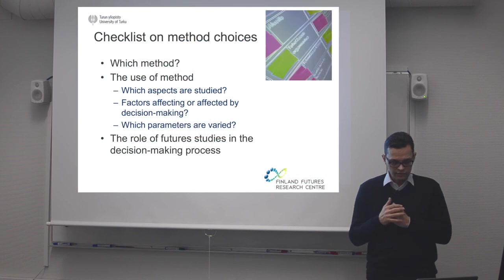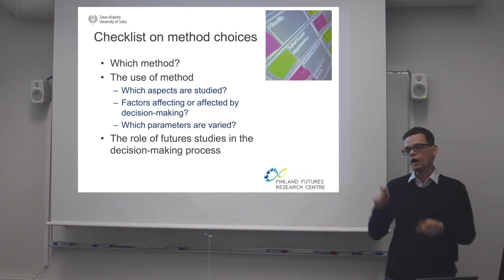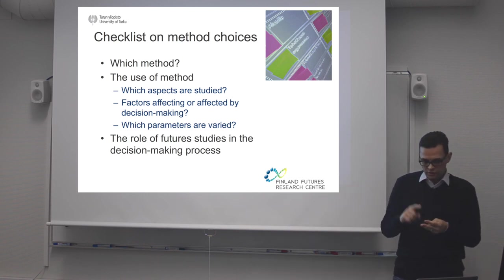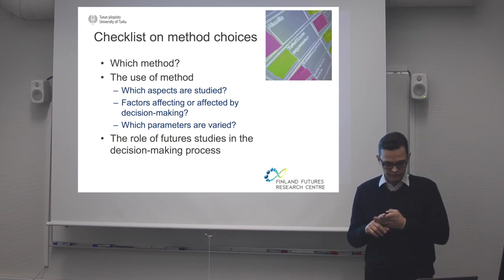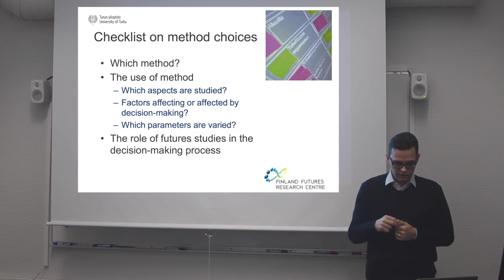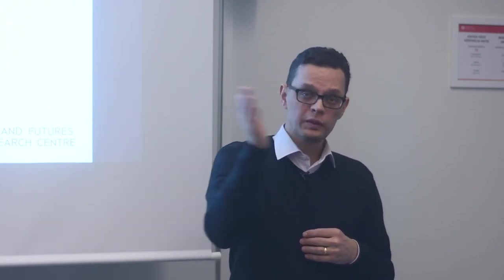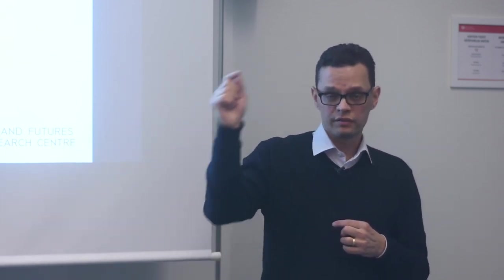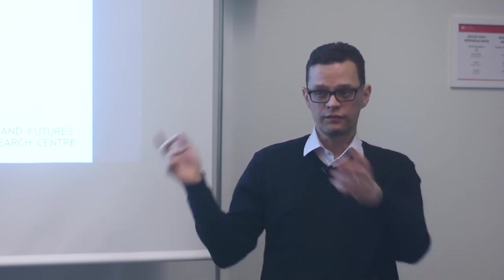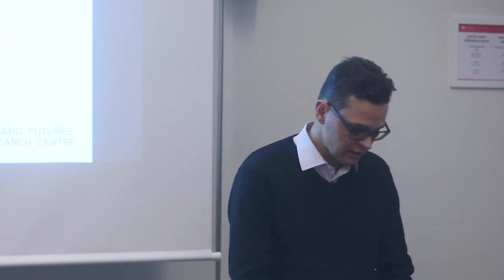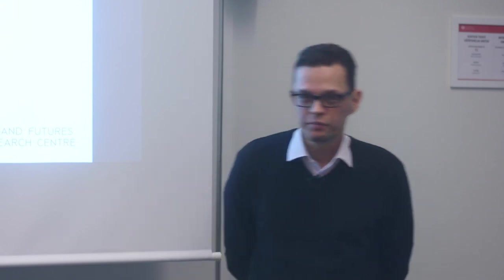Finally, a checklist on method choices. Think which method you choose, how you're going to use it, and what is the role of this method in the decision-making process. Think carefully about what aspects you are going to study and what you are not going to study. When you are varying things within the future across different scenarios, think about what parameters or factors you vary between the different scenarios — this is an extremely important decision that actually dictates the outcomes of your study. The main task is to give yourself the opportunity to find something different from what you hoped for or expected. Thank you.